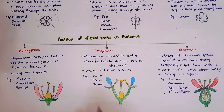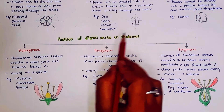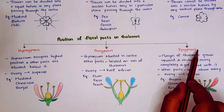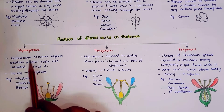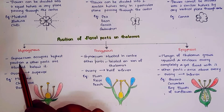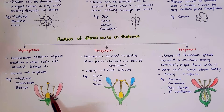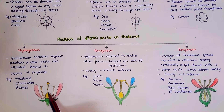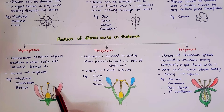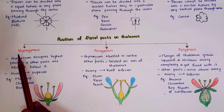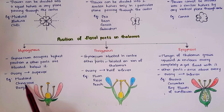Next, coming to the position of floral parts on thalamus. Based on this, flowers are divided into hypogynous, perigynous, and epigynous. In hypogynous, the gynoecium occupies the highest position and other parts are situated below it. This type of ovary is called superior ovary. Examples of hypogynous are mustard, china rose, and brinjal.